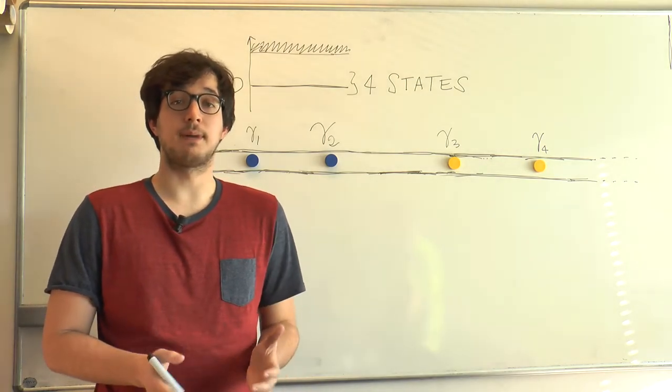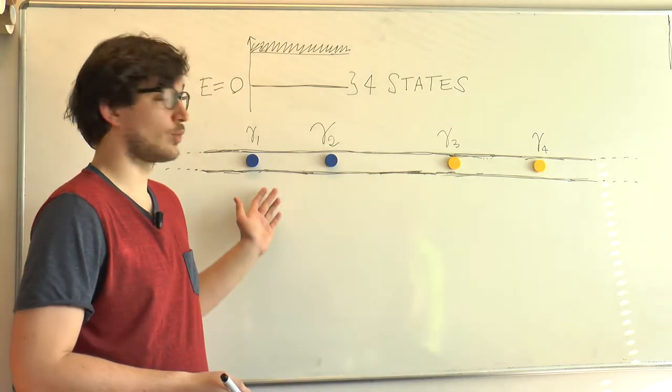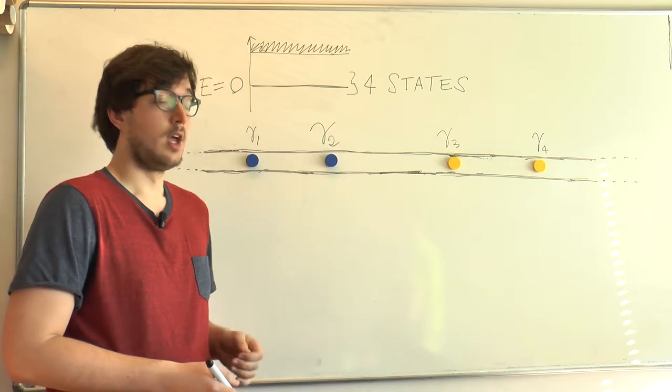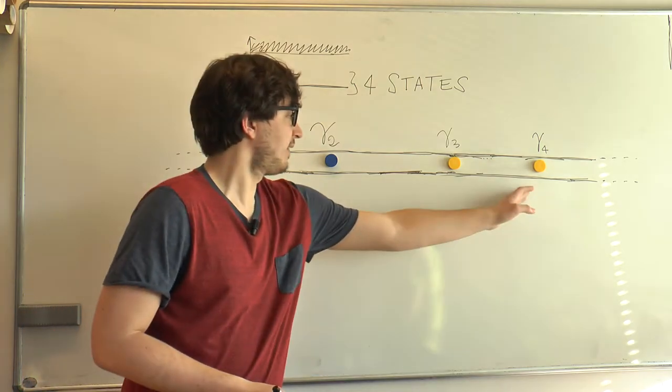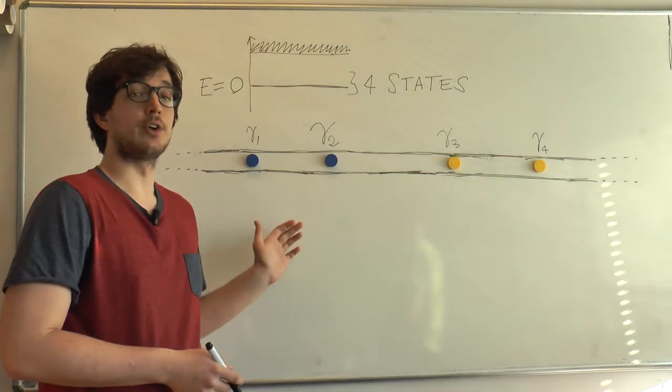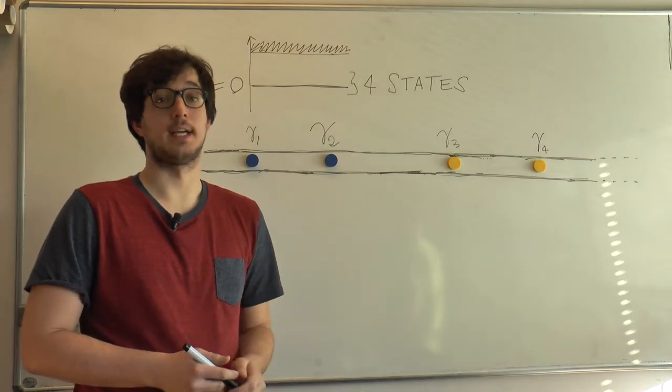So far you have studied Majorana zero modes appearing in one-dimensional systems like nanowires, and I have drawn on this whiteboard an example of such a system with four Majoranas. You have two Majoranas here at the ends and two in the middle. You can imagine that they are here because of domain walls appearing along the nanowire, for instance due to a change in the chemical potential.